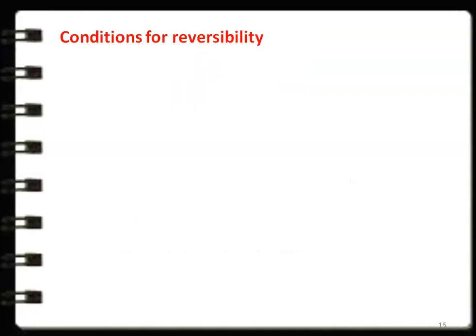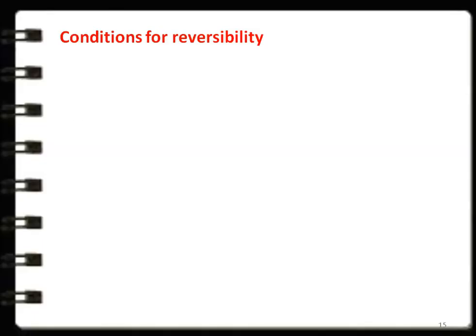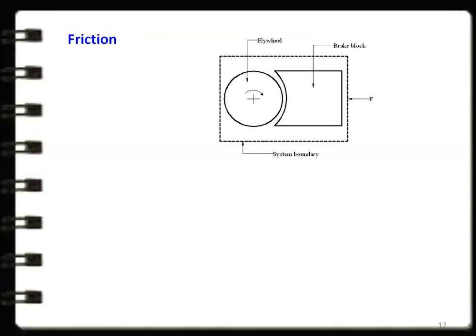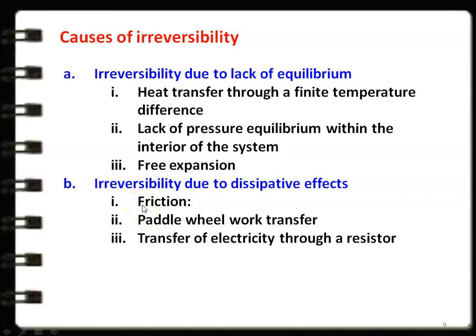We have now discussed the six different causes of irreversibility: heat transfer through finite temperature difference, lack of pressure equilibrium within the system, free expansion, friction, paddle wheel work transfer, and transfer of electricity through a resistor. Among all six, friction is the main cause of irreversibility in mechanical engineering and thermal engineering heat engines.